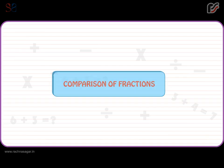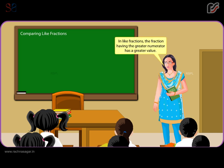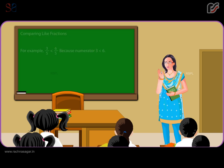Comparison of fractions. Comparing like fractions is very easy. In like fractions, the fraction having the greater numerator has a greater value. For example, 3 by 5 is less than 6 by 5, because numerator 3 is smaller than 6.